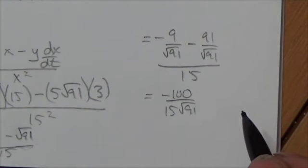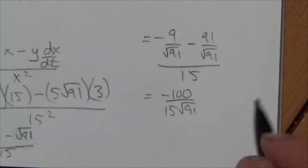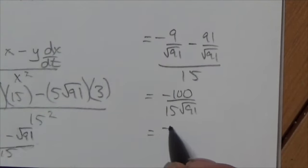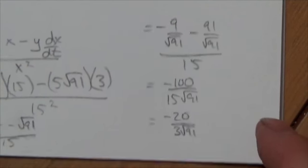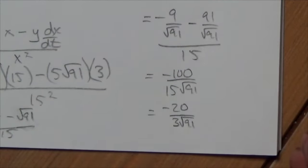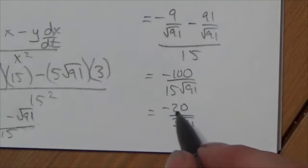I mean, it works out... I guess I could say it works out nicely as long as you're okay with having that radical in the denominator. And actually, I am. I'm totally fine with that. And this is going to reduce down to negative 20 over 3 with a root 91 in the denominator. And that is the rate at which the slope is changing. So there's really no units here because it's a comparison here. It's negative 20 units over 3 root 91.